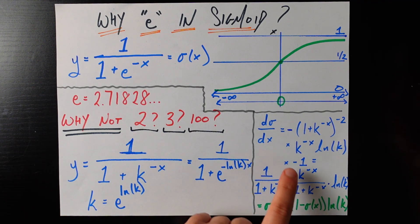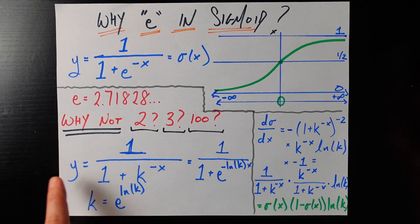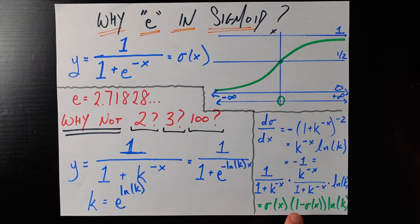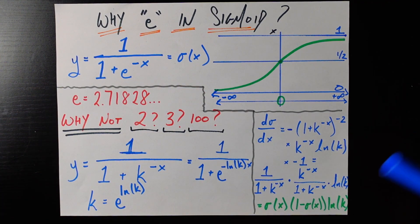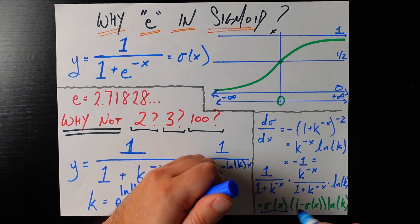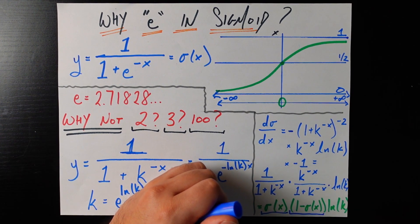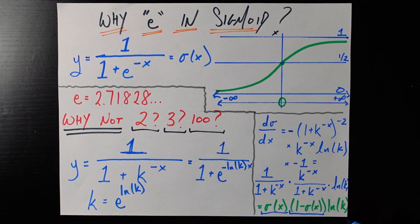Now these actually have really nice forms because 1 over 1 plus k to the negative x is exactly that y or that sigmoid function so we can write that as sigmoid of x. k to the negative x over 1 plus k to the negative x is exactly equal to 1 minus y or 1 minus the sigmoid of x and so we can write that piece there so we have sigmoid of x times 1 minus sigmoid of x and then we have this pesky ln k out front.